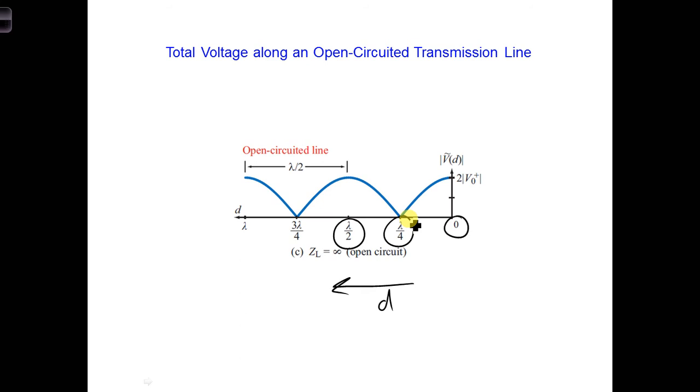In the time domain, the voltage varies sinusoidally in time with the amplitude magnitude shown here. For example, the voltage at the load varies sinusoidally in time. So it starts at 0 and it goes up to 2v naught plus and back down again. So over time, it will oscillate back and forth.